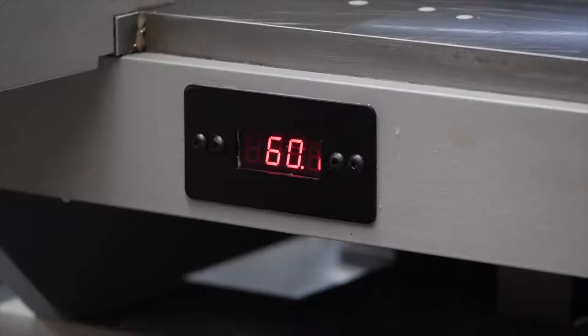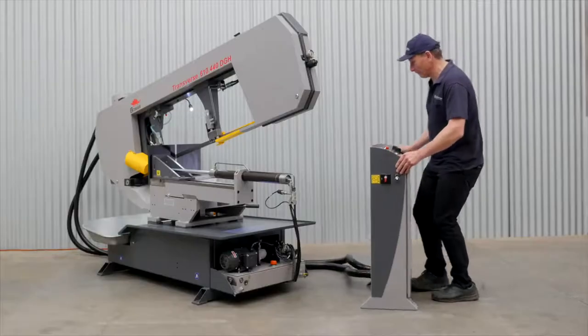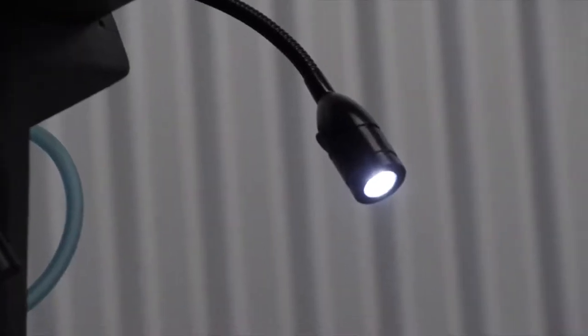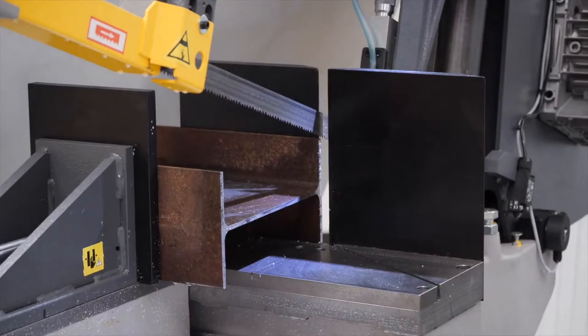For accurate efficient mitre cutting the machine is fitted with a digital readout. The remote control panel can be easily moved to any position allowing for safe unobstructed use for the operator. The machine is fitted with a high quality adjustable LED work lamp lighting up the entire cutting area.